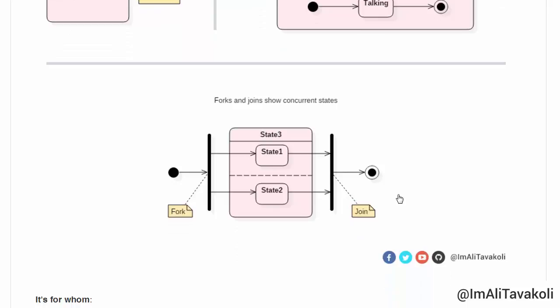Now, let's take a look at our next example, which shows us forks and joins. And they actually help us to demonstrating concurrent states and the states that are going to happen at the same time. So,